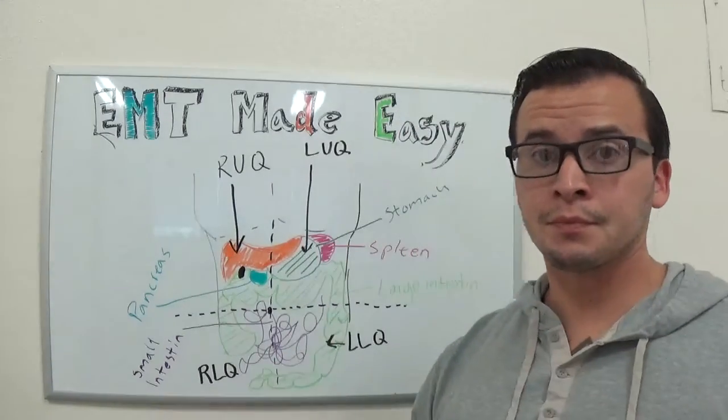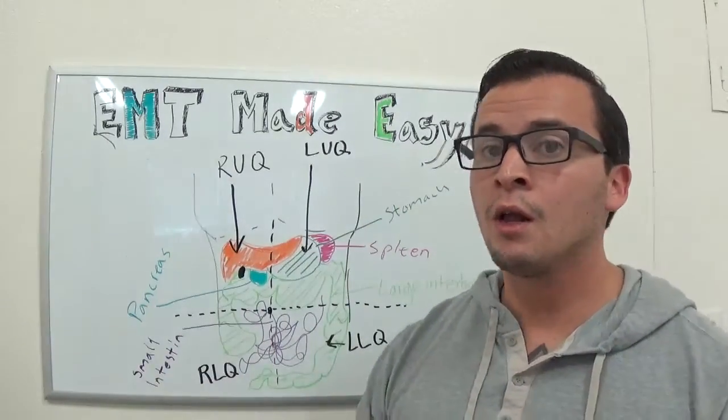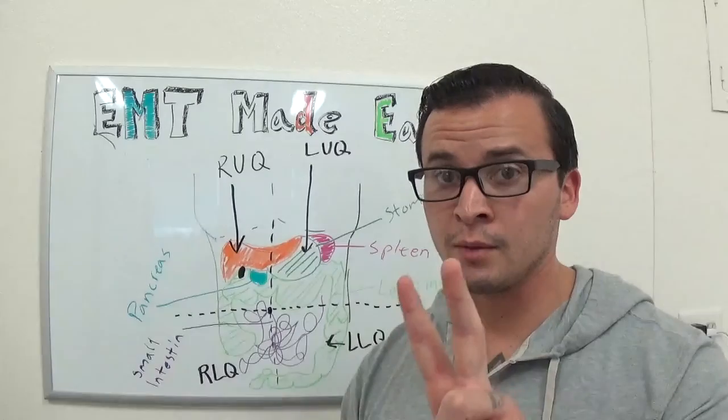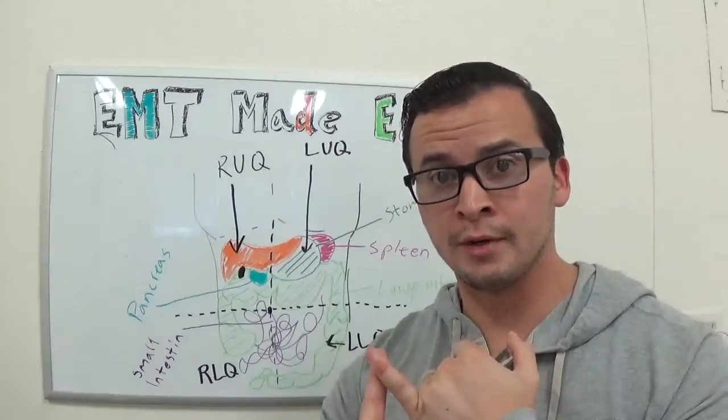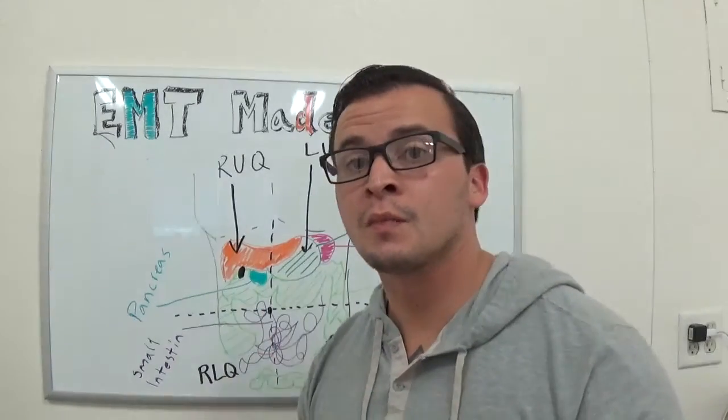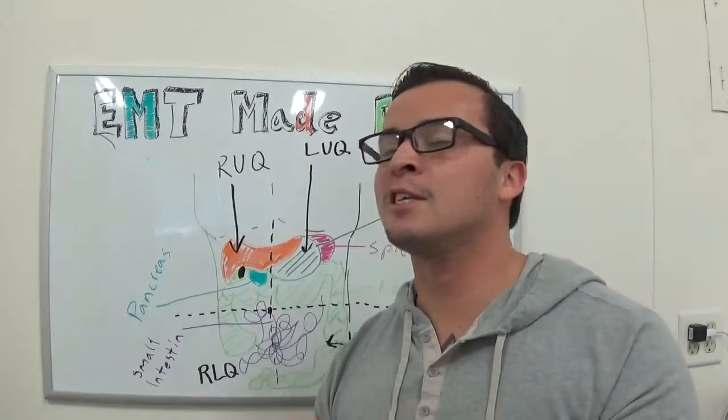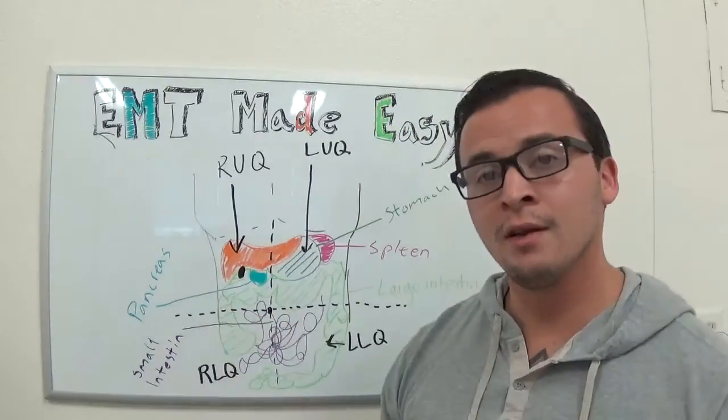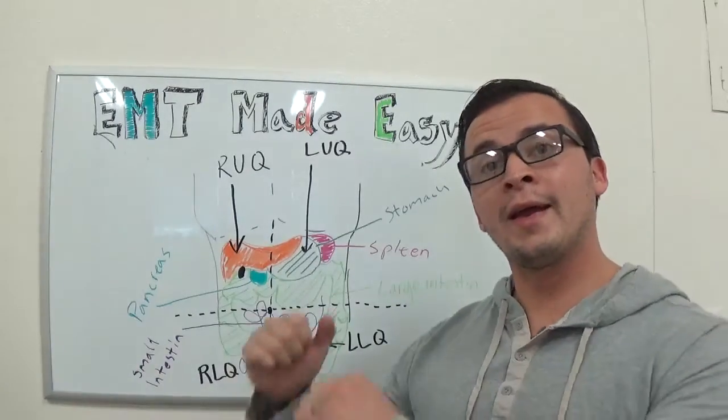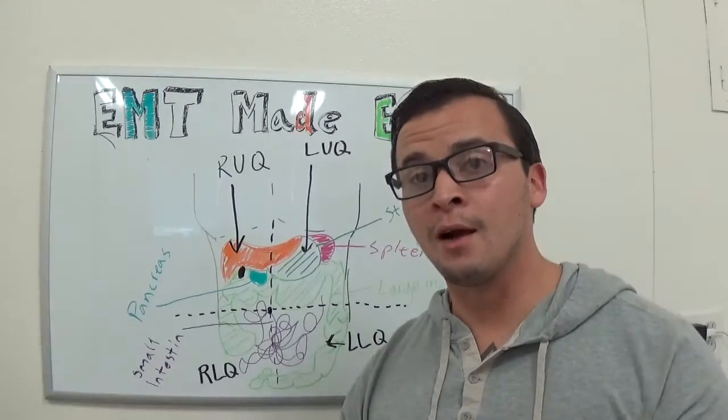Now let's talk about trauma. Just in general, we're talking about EMT, so we're keeping it basic. This is an EMT mini lecture. When we're talking about the abdomen and trauma, there's only two types of trauma for EMTs that you should know about: there's blunt trauma and then there's penetrating trauma.